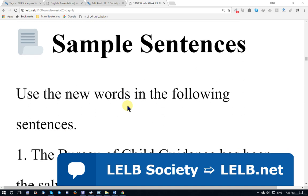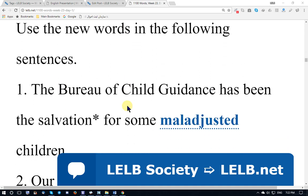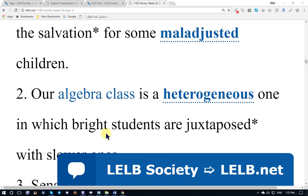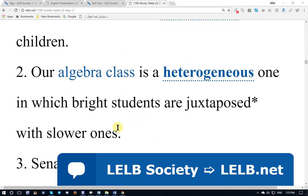Sample sentence one: The bureau of child guidance has been the salvation for some maladjusted children. Bureau means an organization or office; salvation here means remedy or help. Sample sentence two: Our algebra class is a heterogeneous one in which bright students are juxtaposed with slower ones. Algebra is another branch of science; juxtaposed means compared and contrasted.